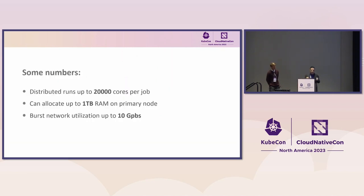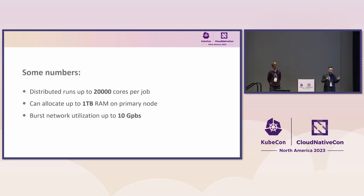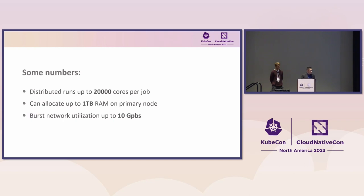To give you some simple numbers: for a single batch job, 20,000 cores is not unheard of, and we even hear about 50,000 cores. One single node can take memory up to one terabyte, and burst communication between components can be 10 gigabits per second. That is the scale of one single batch job we're dealing with.